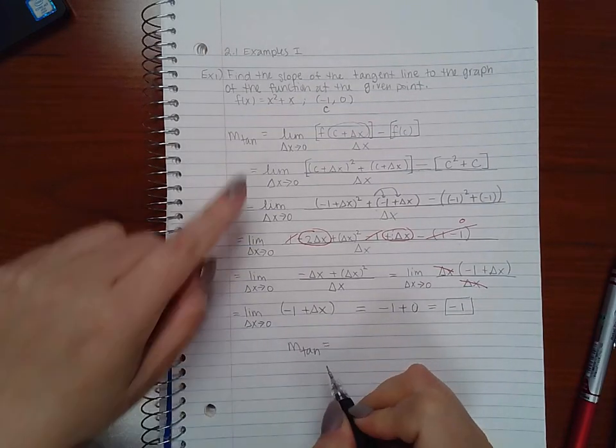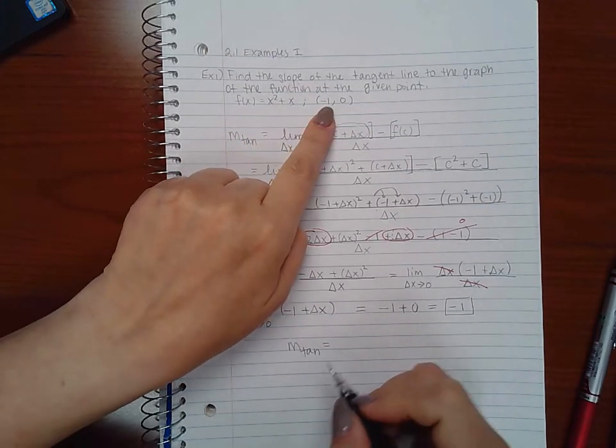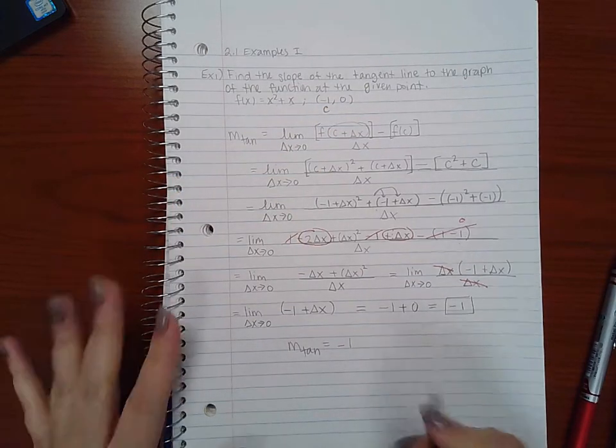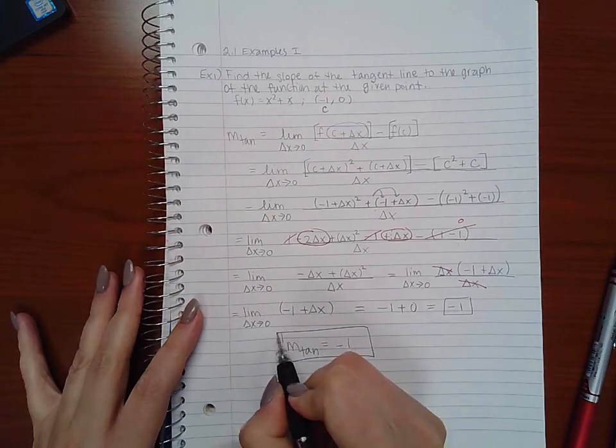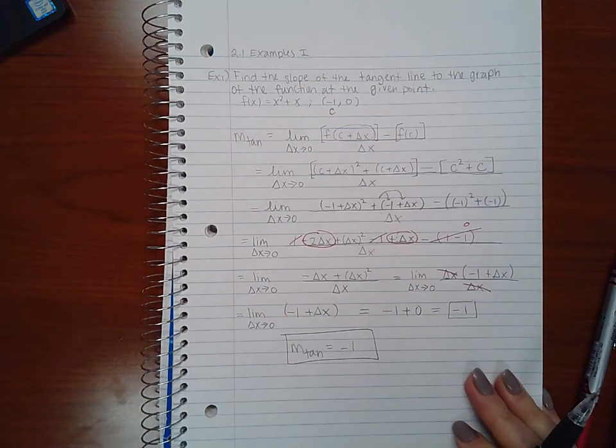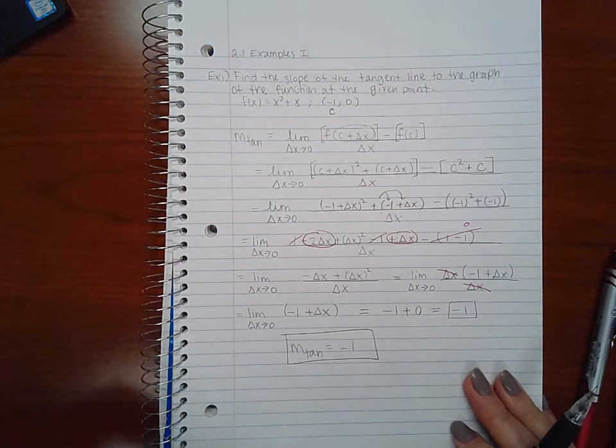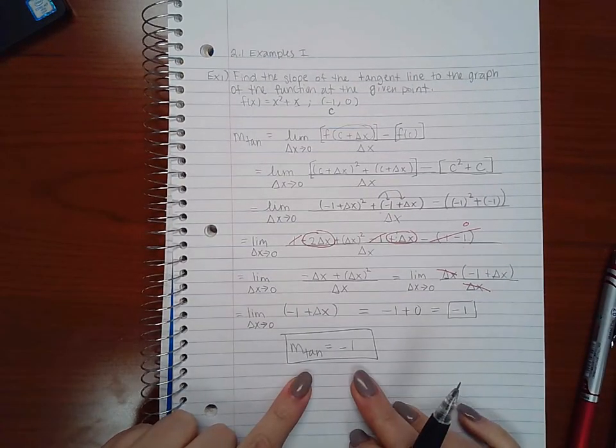So the slope of the tangent line for this function at this point is negative one. Now that's all it asked me to do. It did not ask me to find the tangent line, all it wanted me to find was the slope of the tangent line. Okay, so we are done with this particular problem.